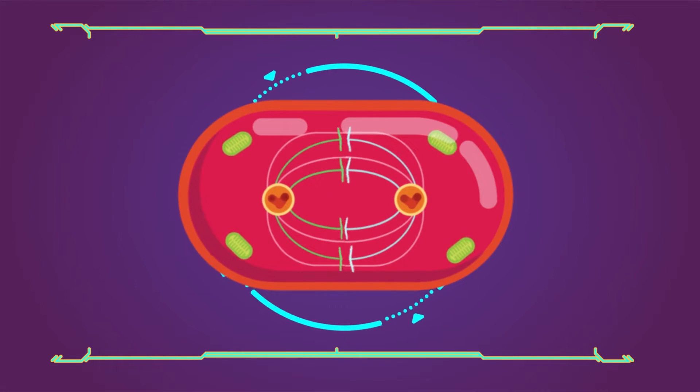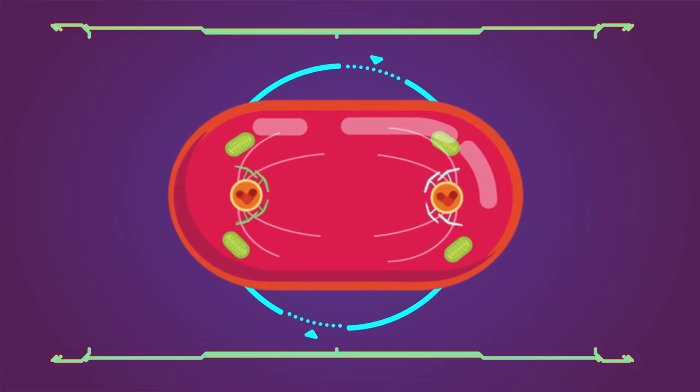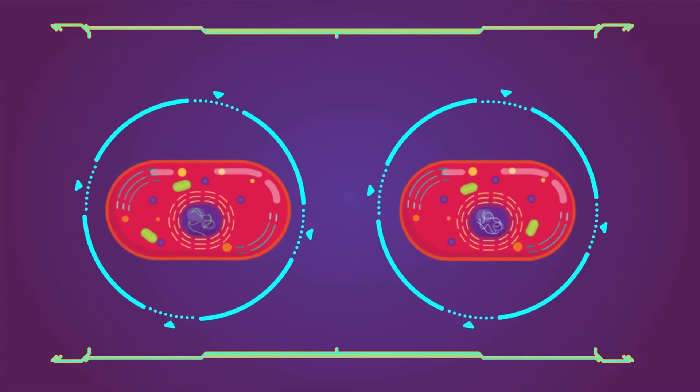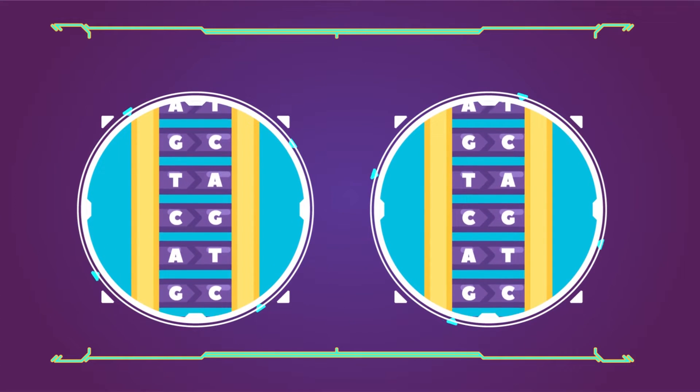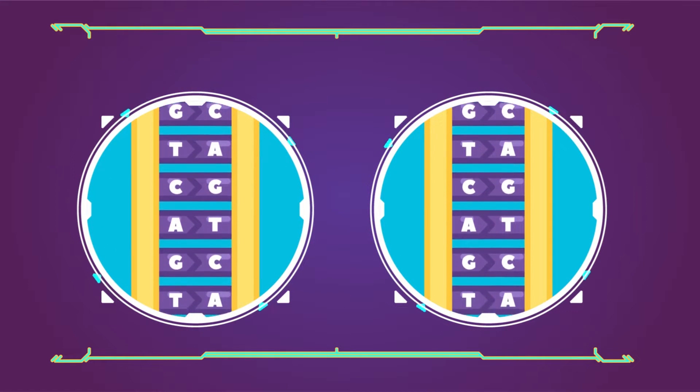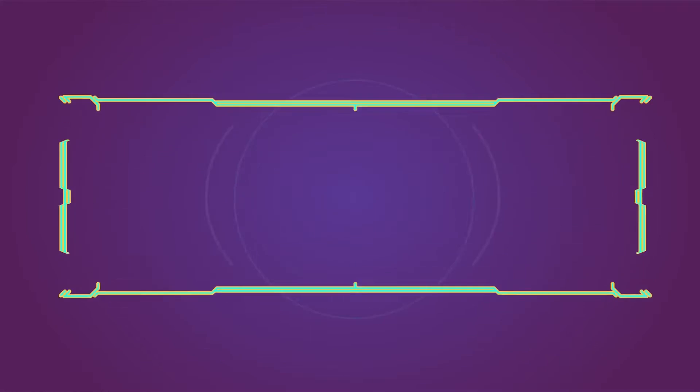It duplicates its DNA and the two new cells, daughter cells, have the same pieces and genetic code. Two identical copies come from one original. Beyond the idea that two identical cells are created, there are certain steps in the process.